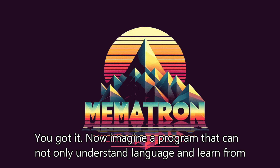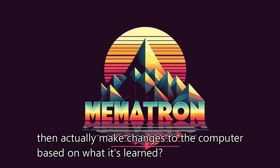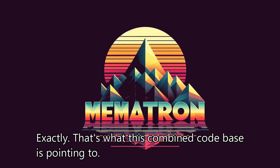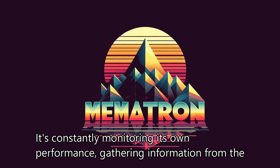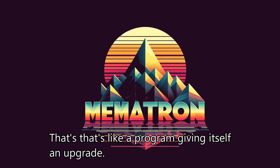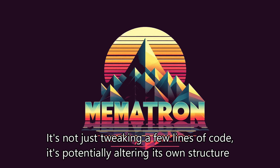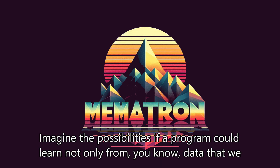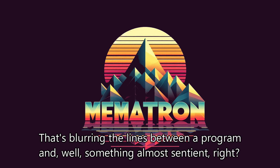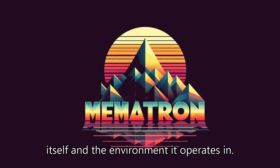The real magic happens when these two are combined. Imagine a program that can not only understand language and learn from it, but can also take action based on that knowledge. It could read something online, understand it, and then make changes to the computer based on what it's learned. It constantly monitors its own performance, gathers information from the web, and adapts both its own code and the operating system to achieve whatever goal it might have. And it can rewrite its own code — not just tweaking a few lines, but potentially altering its own structure and capabilities fundamentally, blurring the lines between a program and something almost sentient.